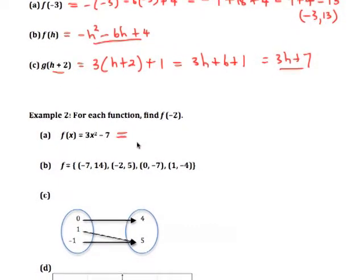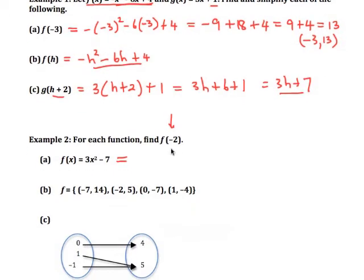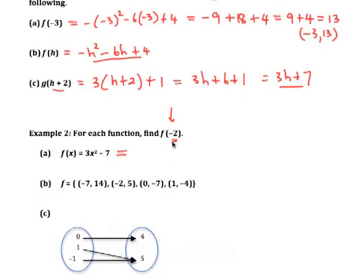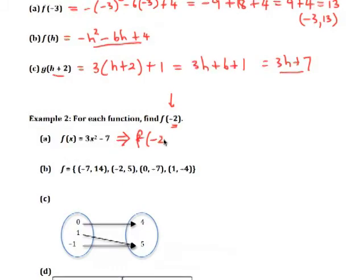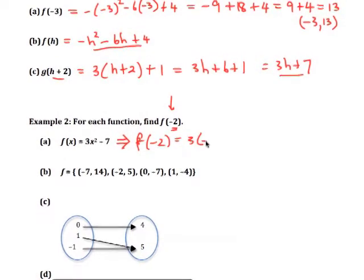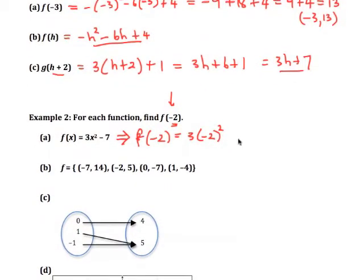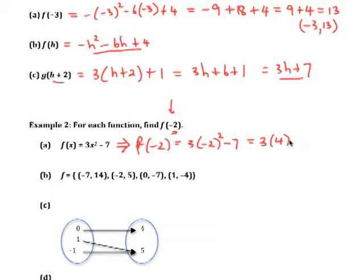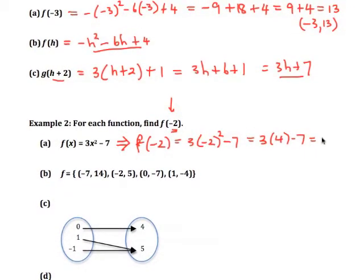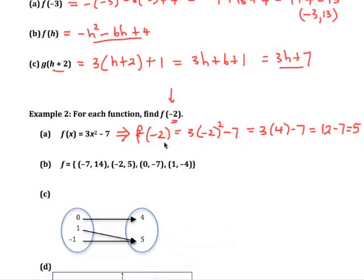In this case here our process is 3x squared minus 7, and we want to find f of negative 2. In other words our x value is negative 2. So this implies f of negative 2 becomes 3 times (negative 2) squared, that's the x value—it's important to use the parentheses here—minus 7, equals 3 times 4 minus 7, which is 12 minus 7, which is 5.